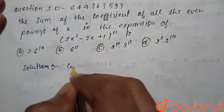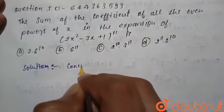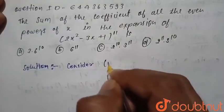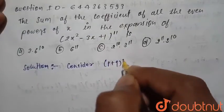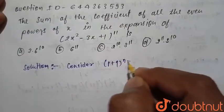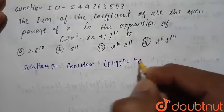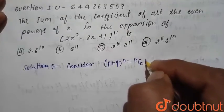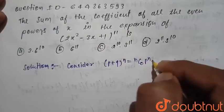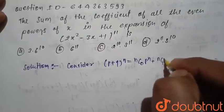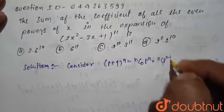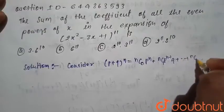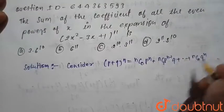First we consider a binomial expansion. Let's consider a binomial expansion: (p + q) raised to the power n. This can be written as nC0 · p^n + nC1 · p^(n−1) · q, and so on till nCn · q^n.